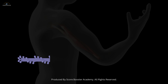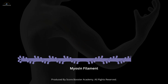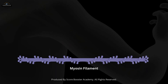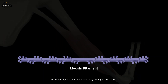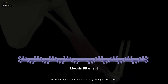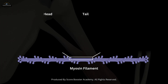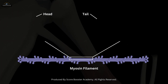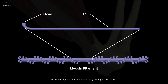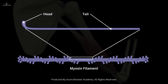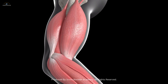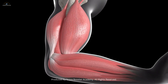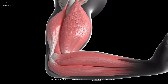Myosin filaments, on the other hand, are thick, consisting of hundreds of myosin molecules. Each myosin molecule has a long tail and a globular head. The heads are essential for binding to actin and performing the power stroke during muscle contraction.